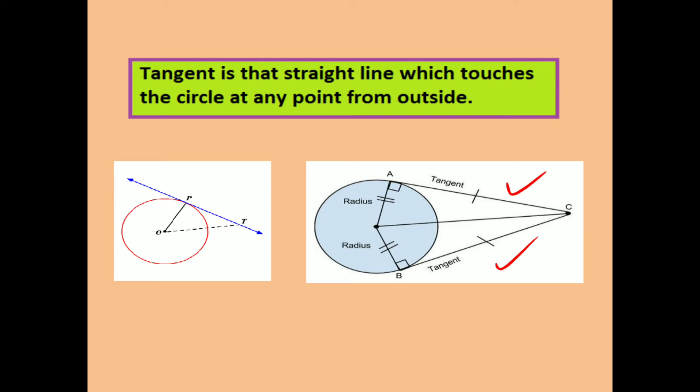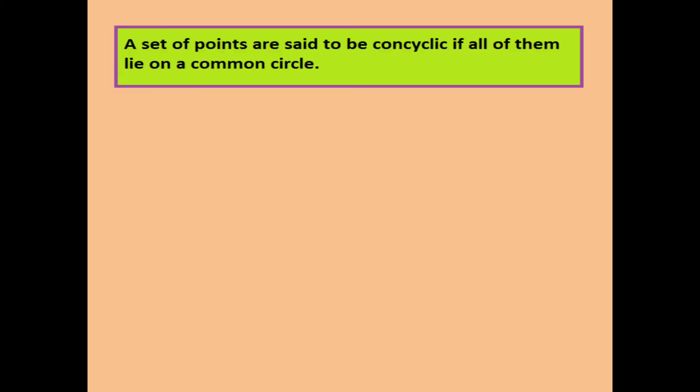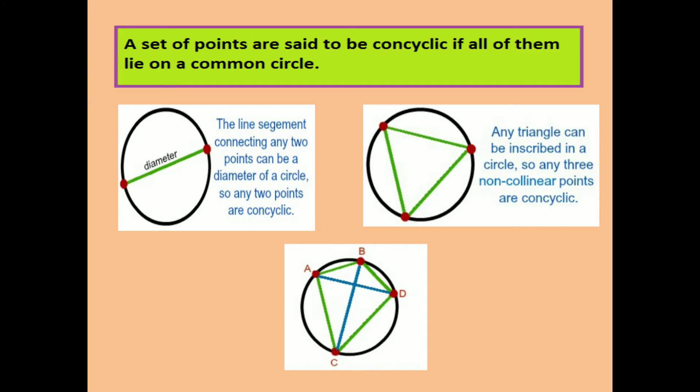A set of points are said to be concyclic if all of them lie on a common circle. In other words, all concyclic points must be at equal distance from the center. In the given figures, two points can be concyclic if the given chord is a diameter. Three points or four points can be concyclic if all of them lie on the circumference of the circle, as shown on the screen.